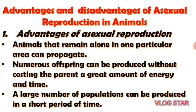Advantages of asexual reproduction: First, animals that remain alone in one particular area can propagate since there is no fertilization process and no second parent is needed. Second, numerous offspring can be reproduced without causing the parents a great amount of energy and time. Third, a large number of individuals can be reproduced in a short period of time, just like in starfish.